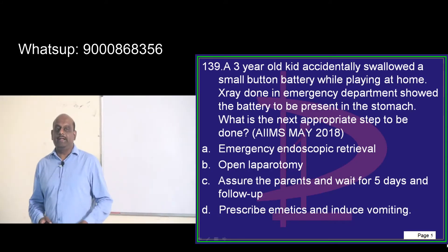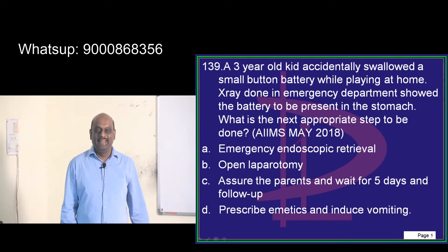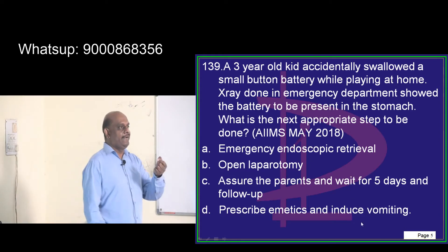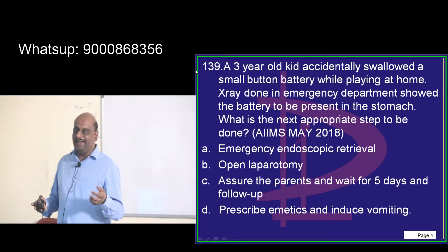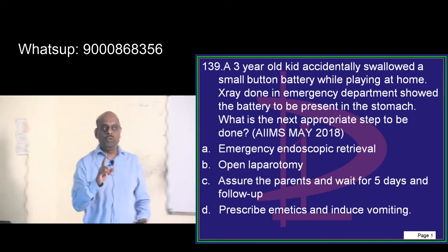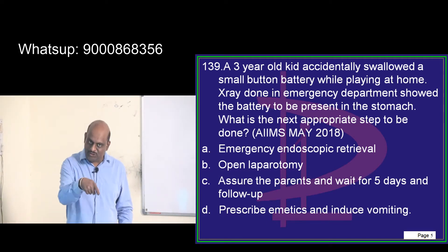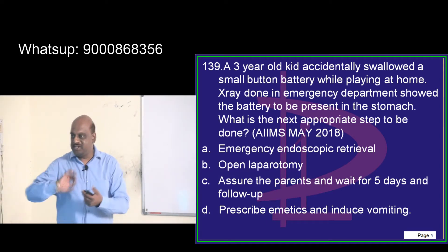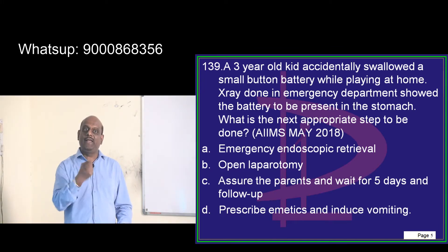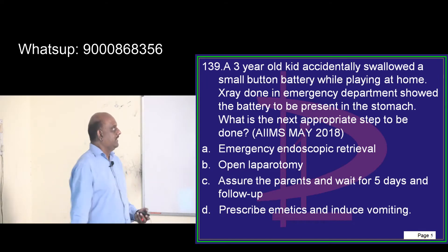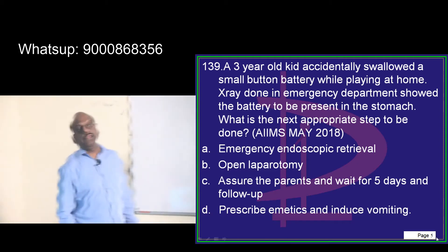A three-year-old kid accidentally swallowed a small button battery — a very common clinical problem. In a one-month casualty posting during internship, you likely get a chance to resuscitate an OP poisoning case and find a child who has swallowed some foreign body. The battery is found in the stomach. What is the next appropriate step?